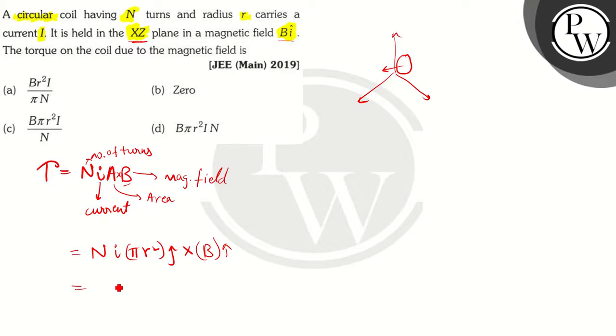So we can write this, we can simplify this equation to be N I pi R square B minus K cap. So here we have the magnitude here.